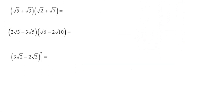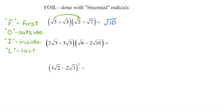Now think back to polynomials — when multiplying a binomial times a binomial, you foil it. FOIL is an acronym to help remember that we multiply every term by every other term. We begin with the first term in each bracket: 1 times 1 gives a coefficient of 1, and 5 times 2 is 10.